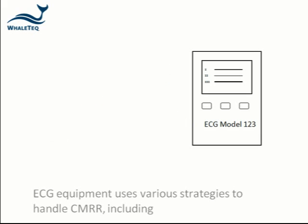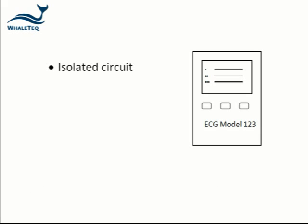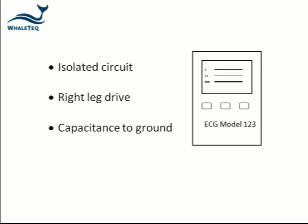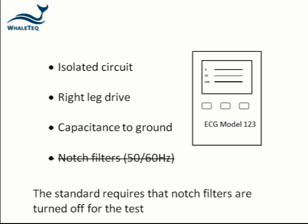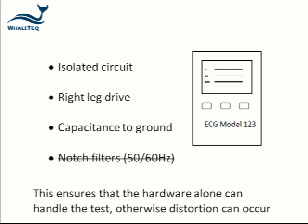ECG equipment uses a variety of strategies to handle CMRR, including an isolated circuit, right leg drive, capacitance to ground, and filtering. However, the standard requires that special mains filters are turned off for the test. This is to make sure that the hardware alone can really handle the test, otherwise the ECG trace can get distorted.